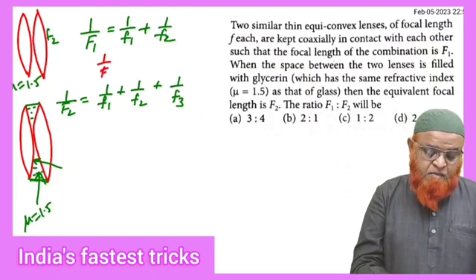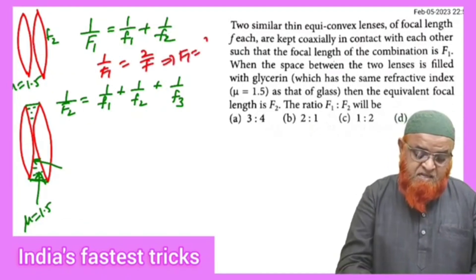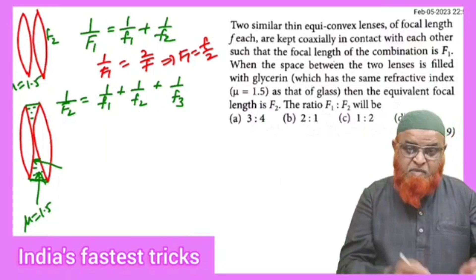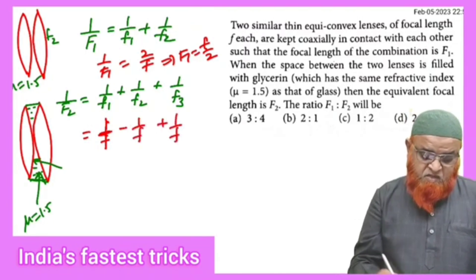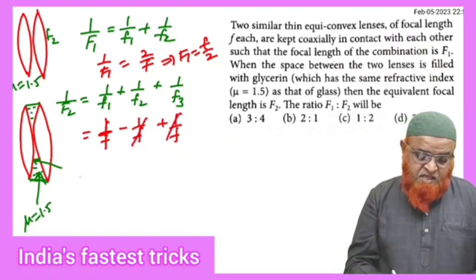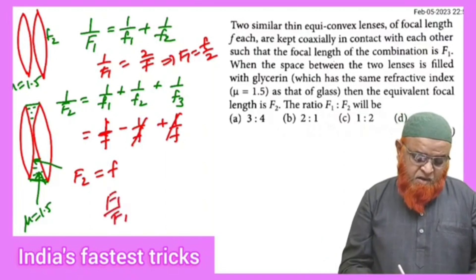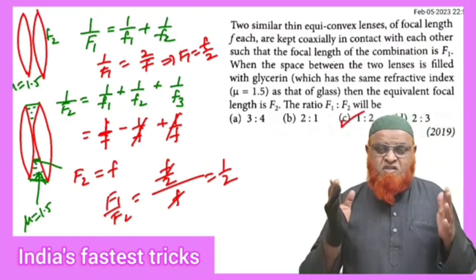Since the focal lengths are the same, we write 1/F1 = 2/F, implying F1 = F/2. In the second case, the glycerin acts as a concave lens with focal length −F. So 1/F2 = 1/F + (−1/F) + 1/F = 1/F, meaning F2 = F. Therefore F1/F2 = (F/2)/F = 1/2. The third option is the correct answer.